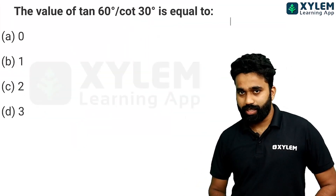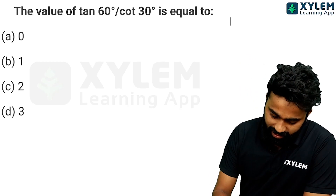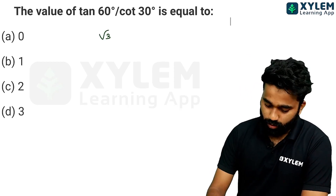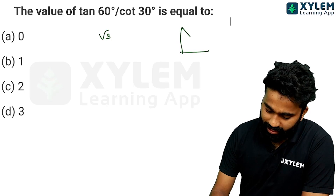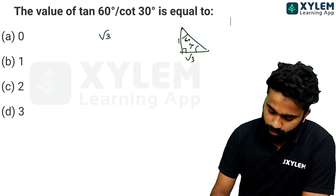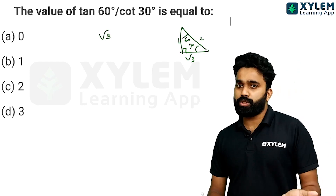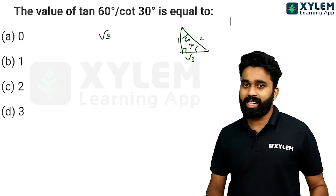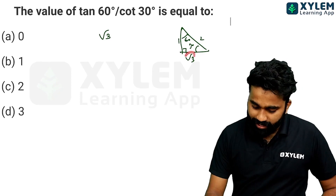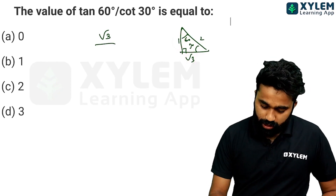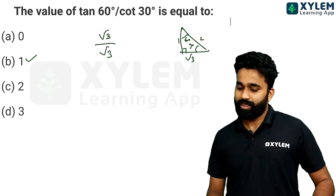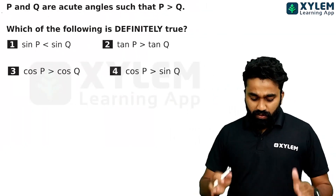Next: tan 60 by cot 30. The value of tan 60 is root 3. Cot 30 is equal to adjacent by opposite, which is root 3. So root 3 by root 3 is equal to 1 — that is the right answer.